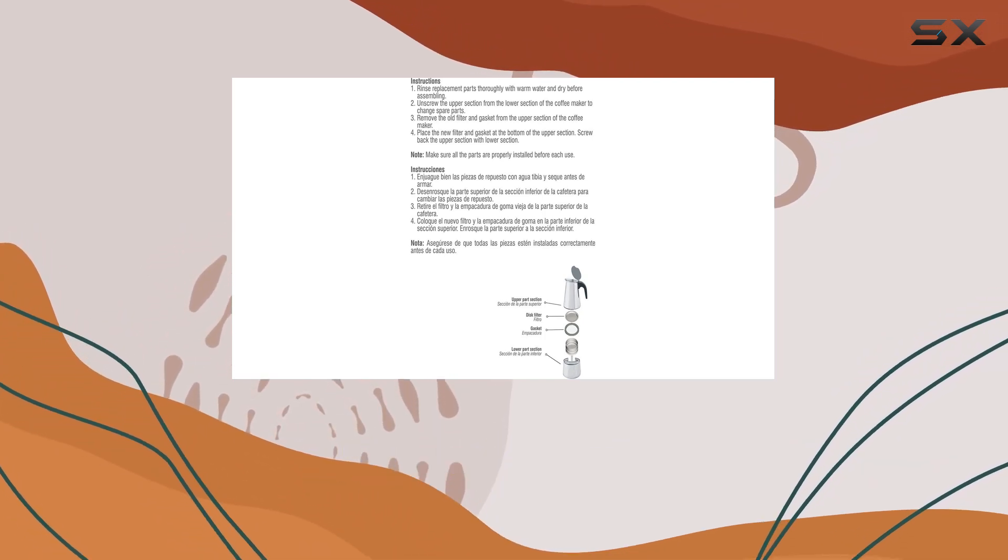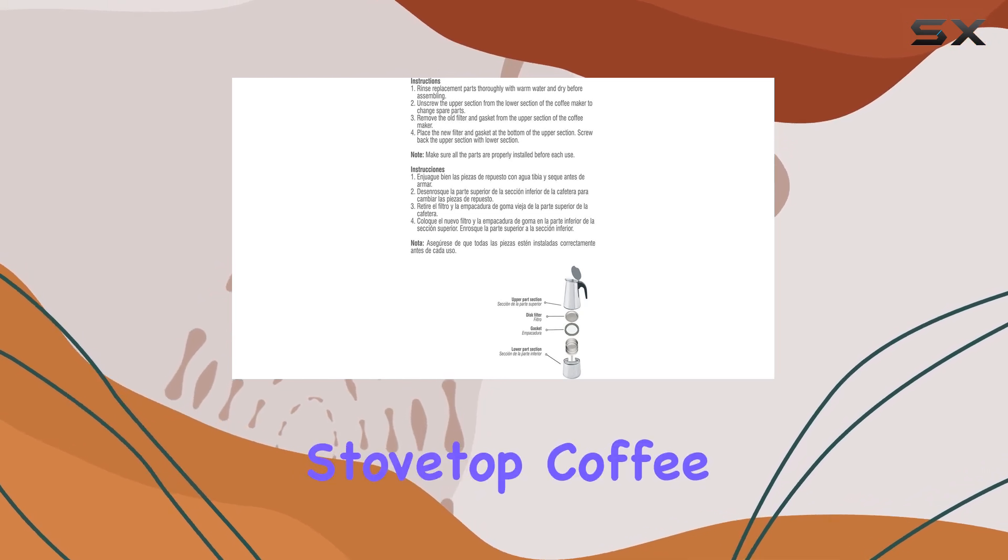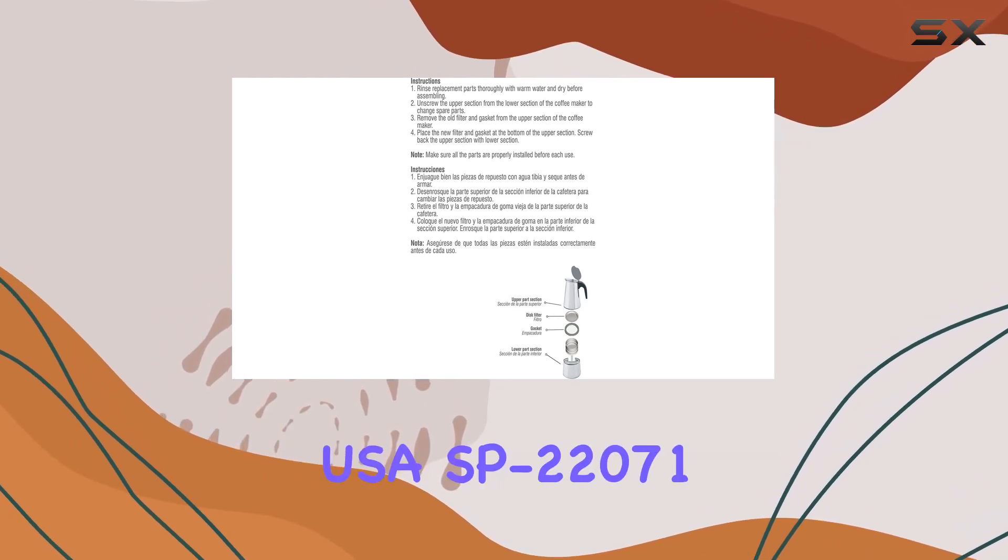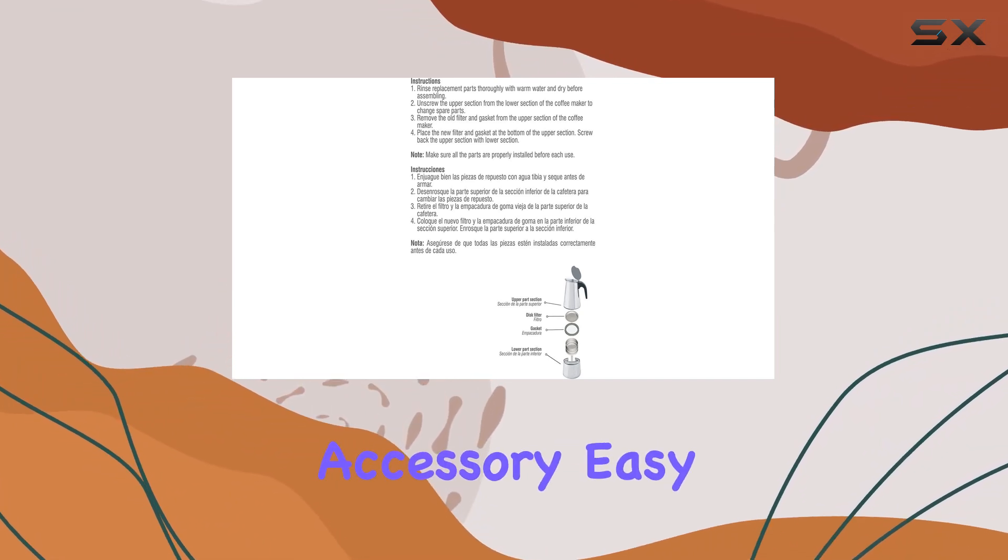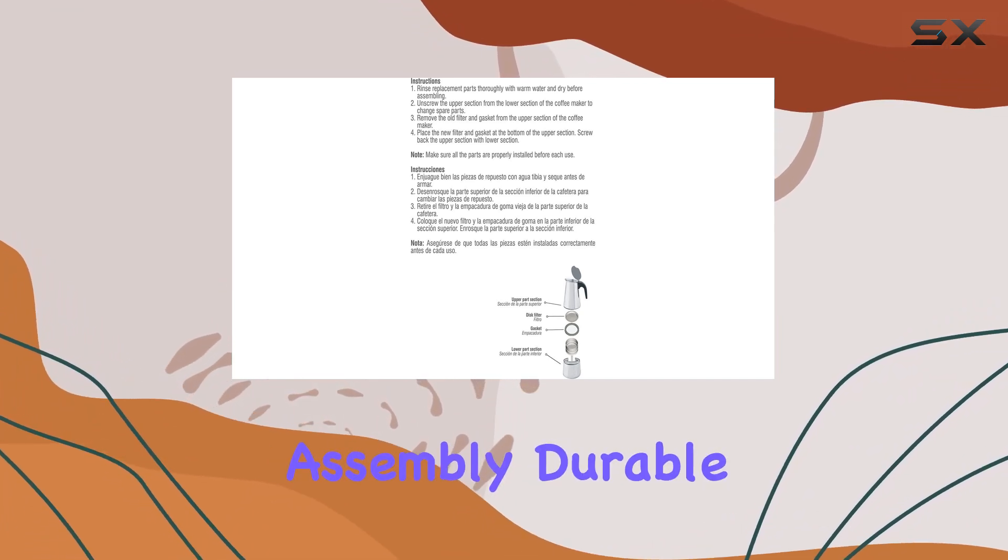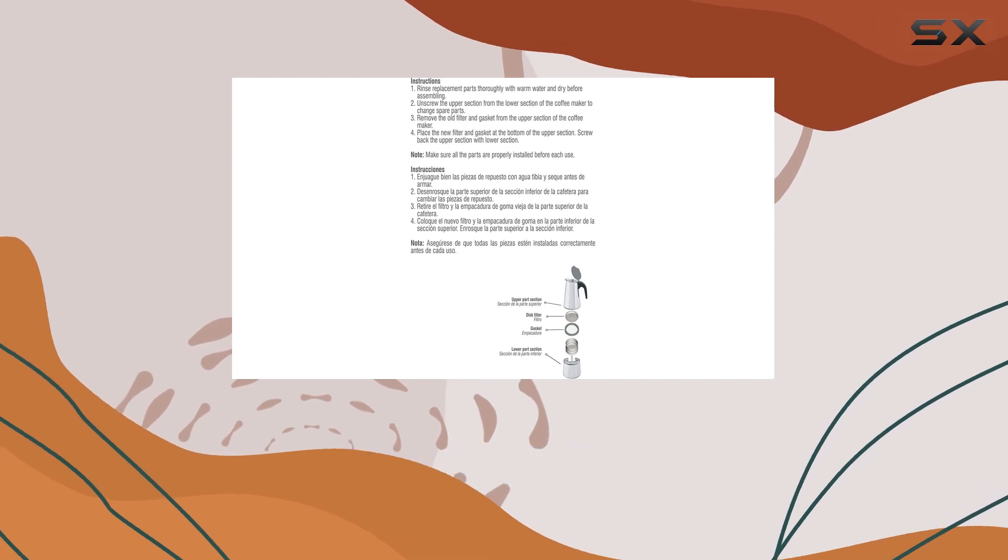To sum it up, if you're a proud owner of an Amusa brand stainless steel stovetop coffee maker, the Amusa USA SP22071 replacement gasket filter is a must-have accessory. Easy assembly, durable construction, and perfect fit. What more could you ask for?